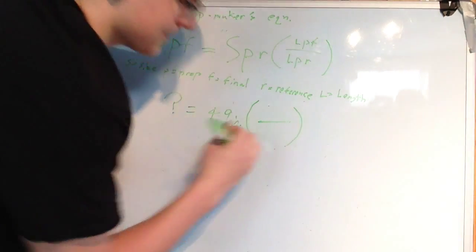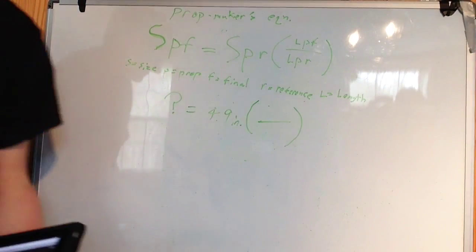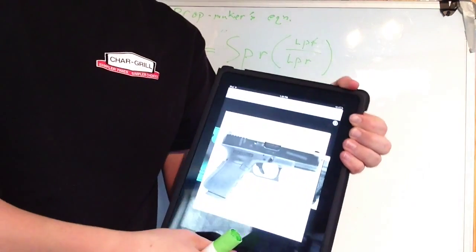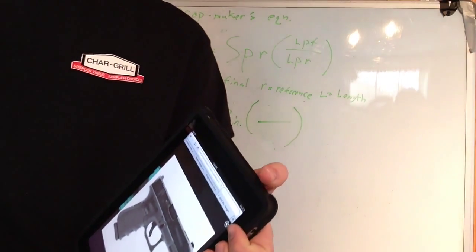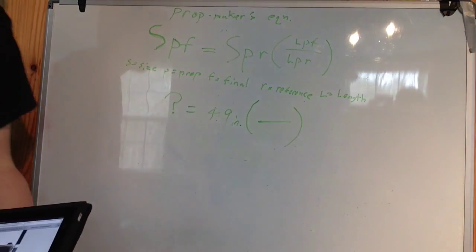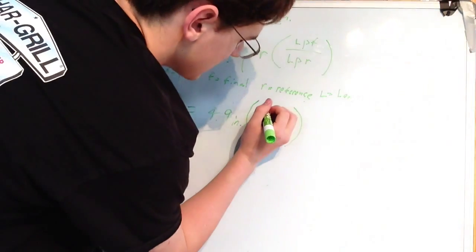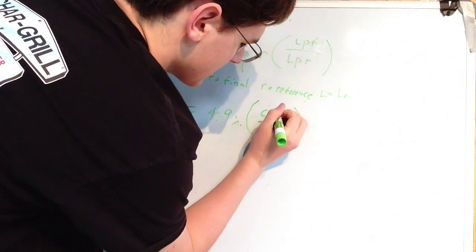L of PF over L of PR. L of PF, that's the length of the prop final. Now, so again, taking my iPad, I look up Glock 23 and find that a Glock 23 is approximately 6.3 inches long. So I figured that out beforehand. So, I'm going to write 6.3 inches.